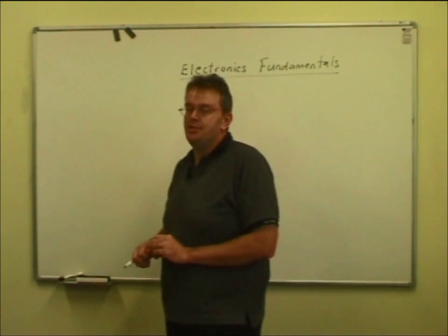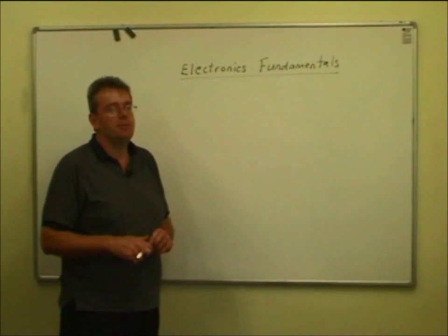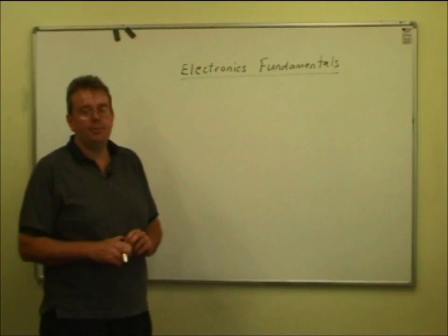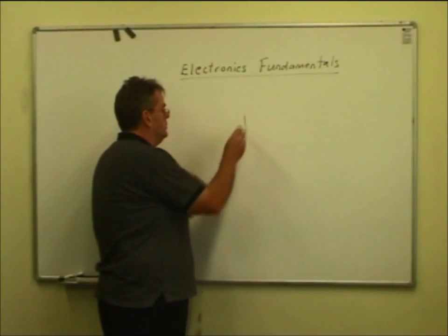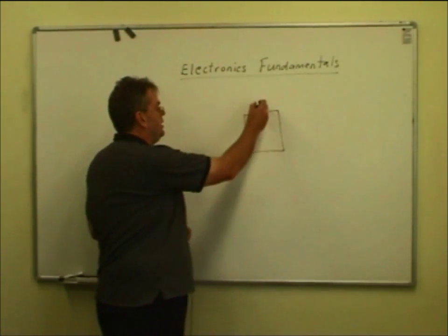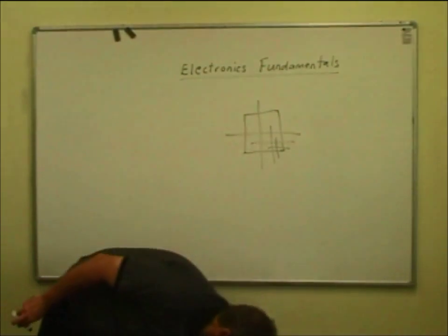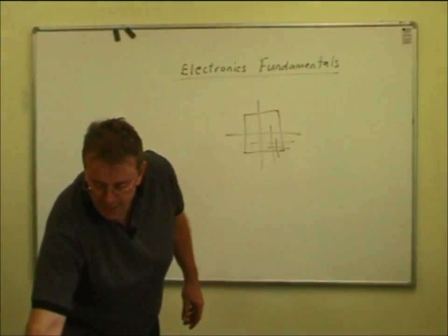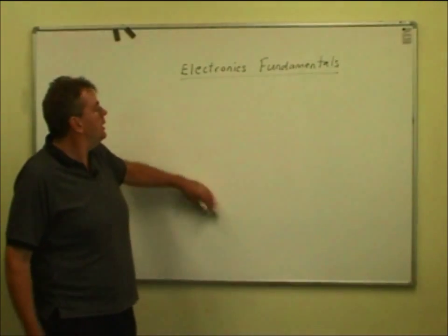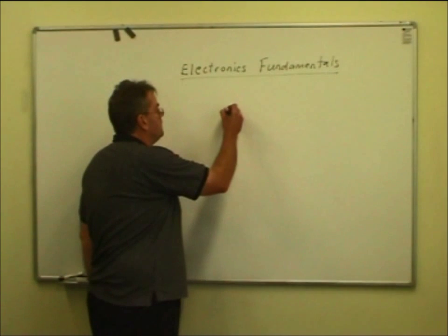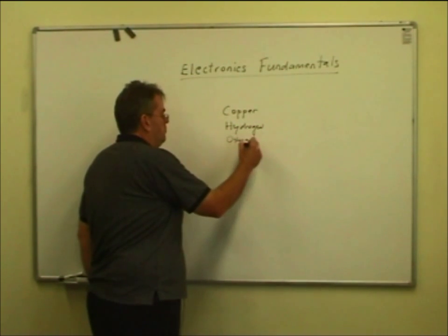Now all matter is composed of atoms. An atom is the smallest thing you can divide an element down into and still keep its characteristics. Let me take a chunk of copper - if we keep dividing it down into smaller and smaller pieces, eventually you'll come to this small atom of copper. If you cut it any smaller it's no longer copper, it's something else. That's what we mean by an atom. Copper as an example is an element, and so is hydrogen and oxygen.